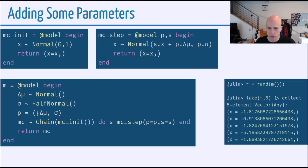And when we take a random value, if we say r equals rand(m), and then we take the first five and collect those, now we will get this vector of named tuples.